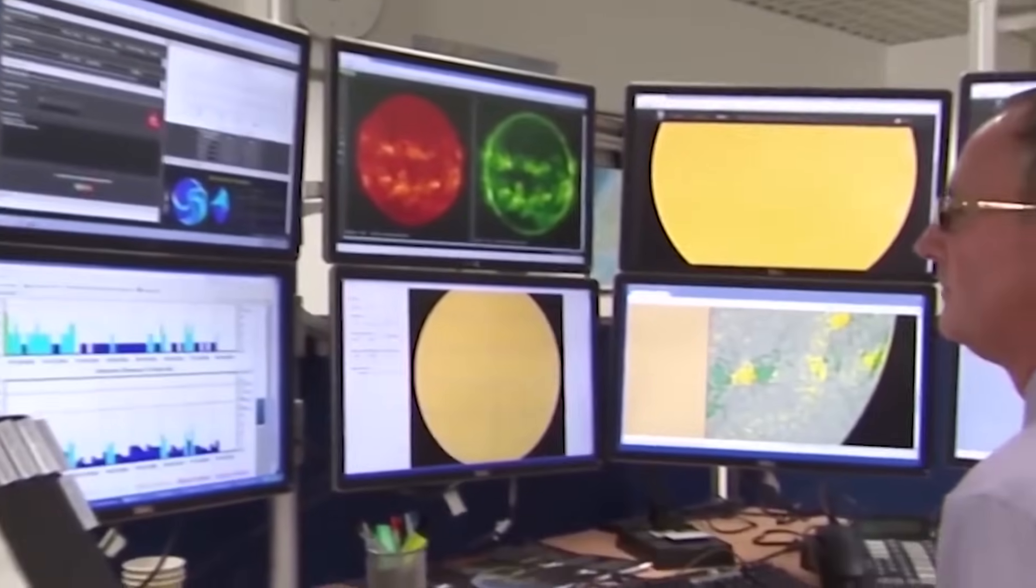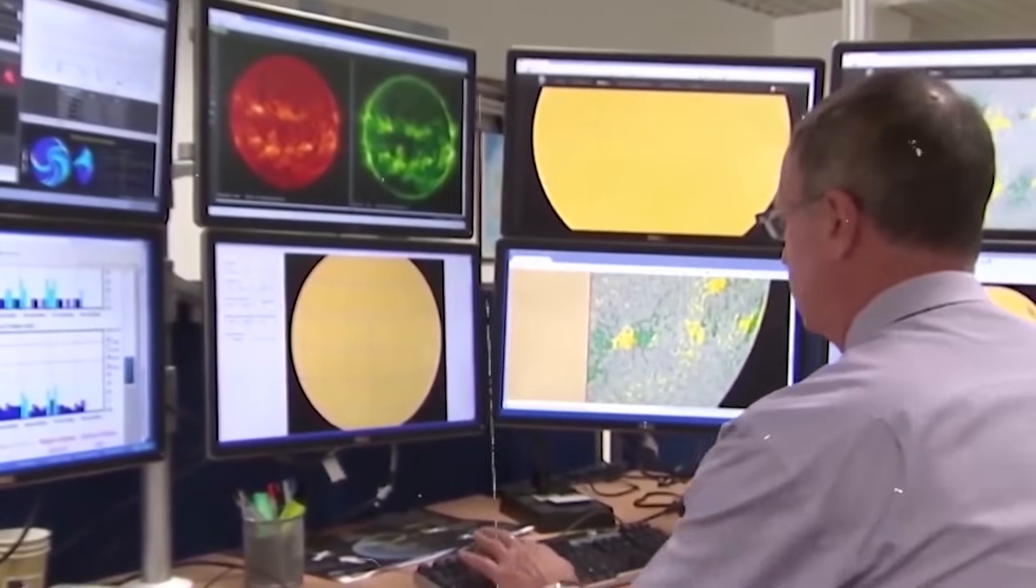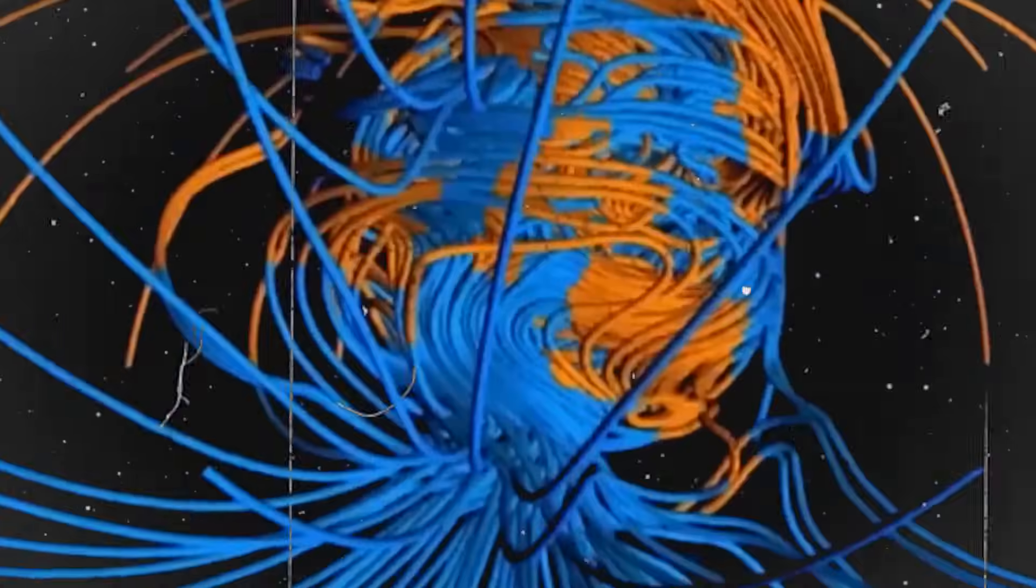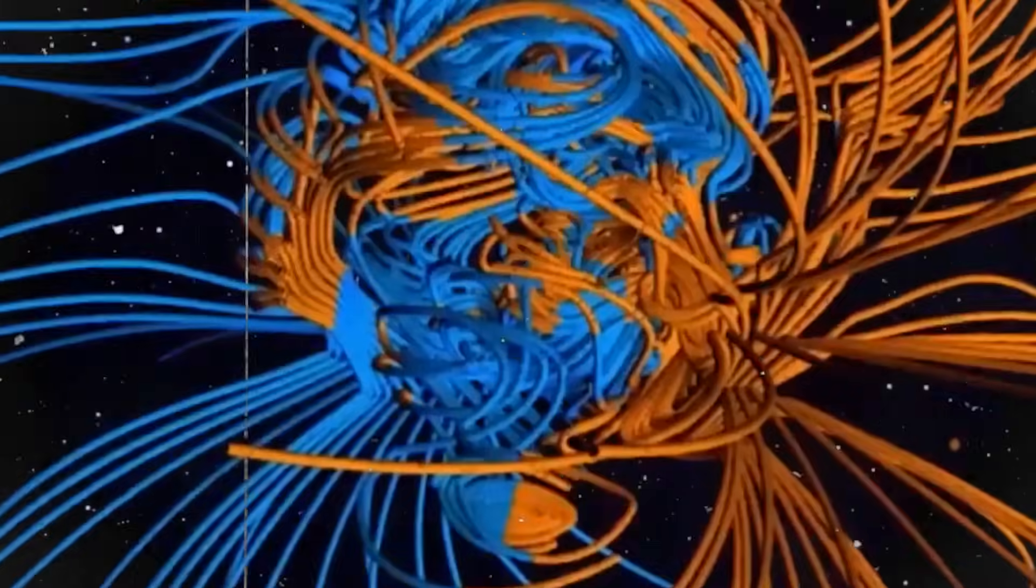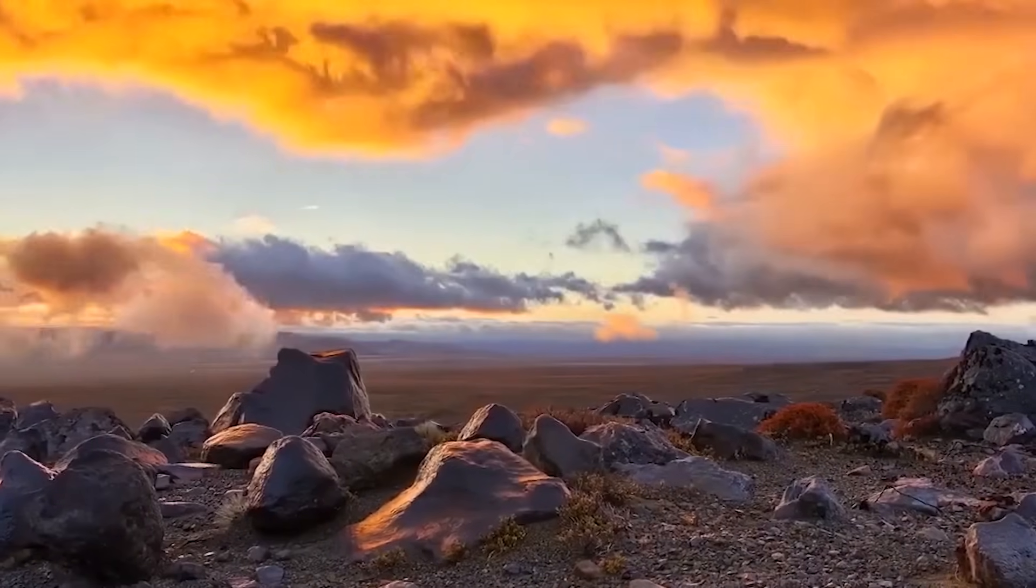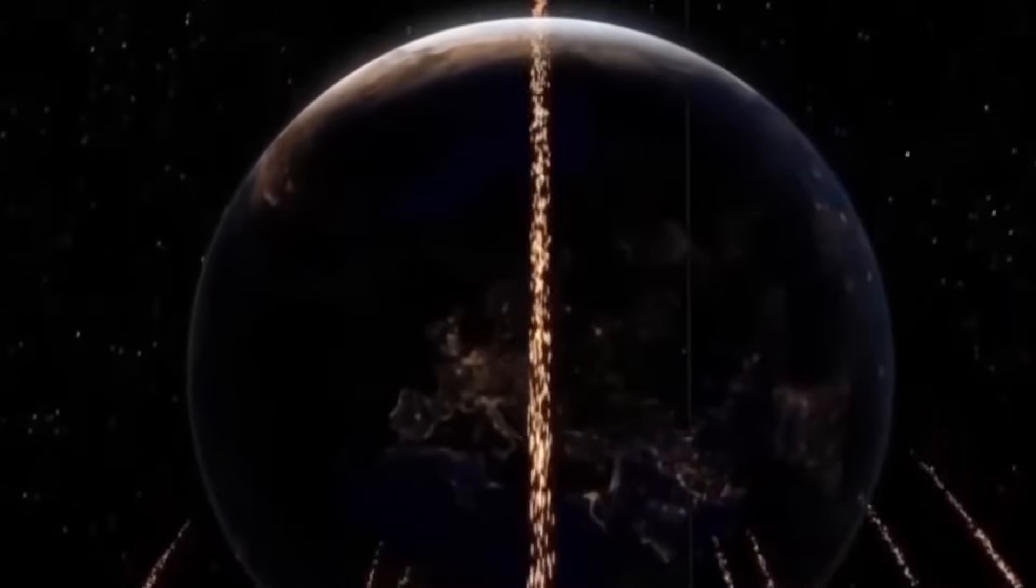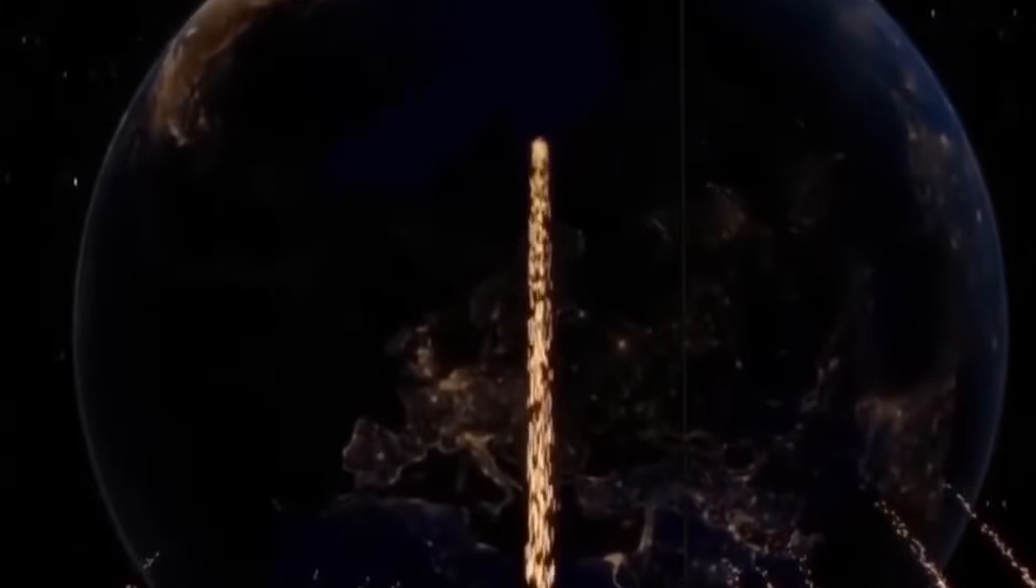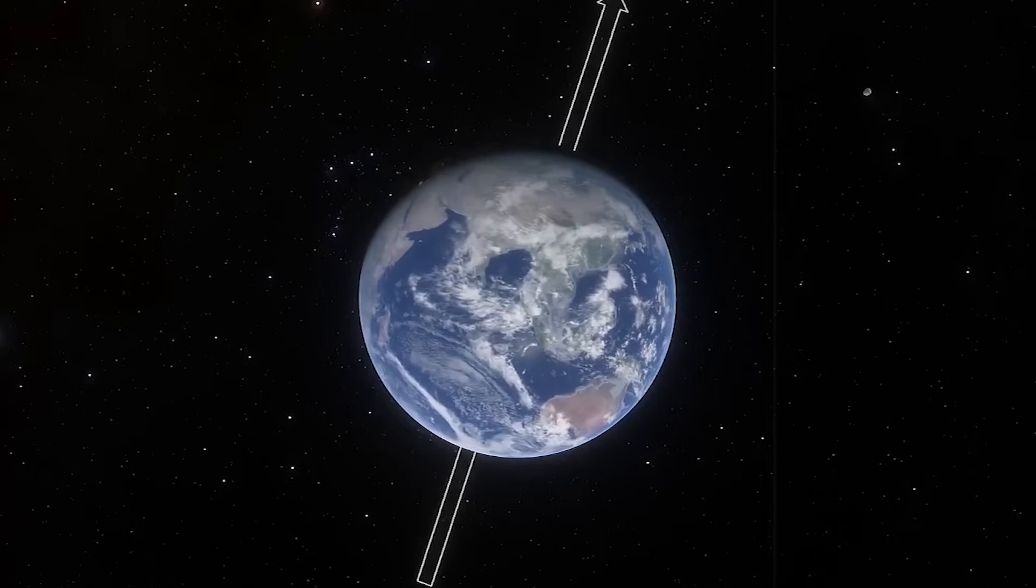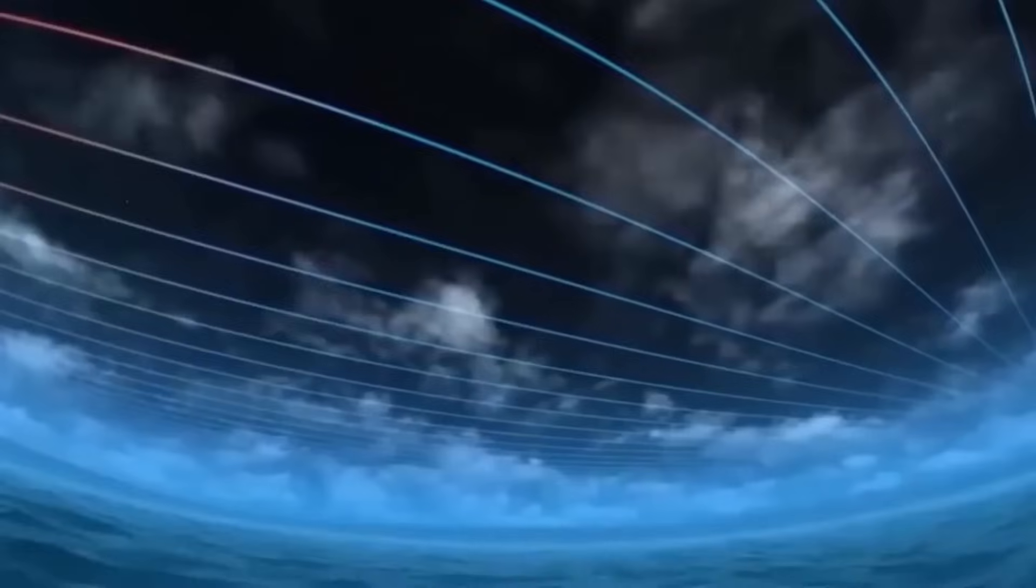The inner core also influences this process. Its growth, composition, and movements affect the convection currents in the outer core, thereby impacting the magnetic field's generation and maintenance. This intricate interplay between the solid inner core and the fluid outer core is critical in the occurrence of geomagnetic reversals.